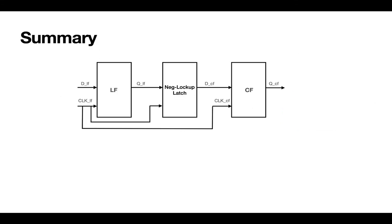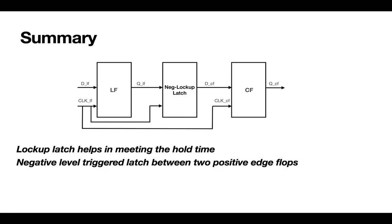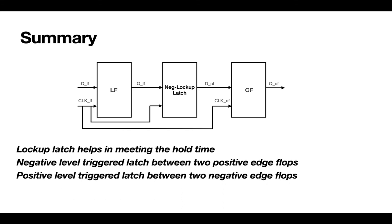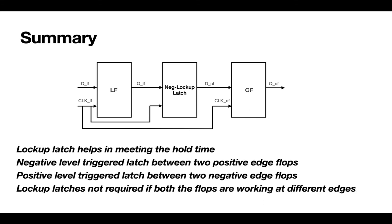In summary: lockup latch helps in meeting the hold time. Use a negative level-trigger latch if you have two positive-edge flops, and use a positive level-trigger latch if you have two negative-edge flops. Lockup latches are not required if both flops are working at different edges — that is, one at a positive edge and another at a negative edge. Thanks for watching.